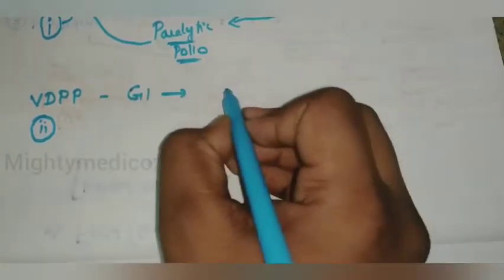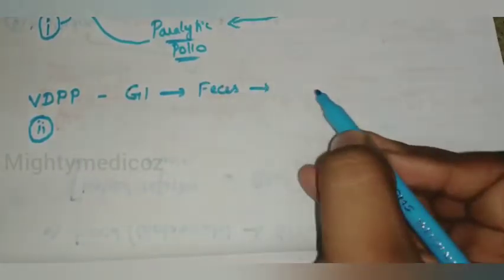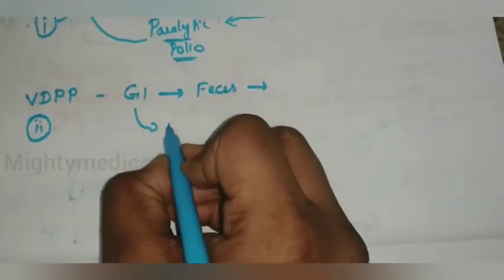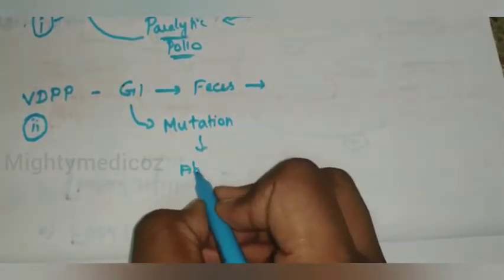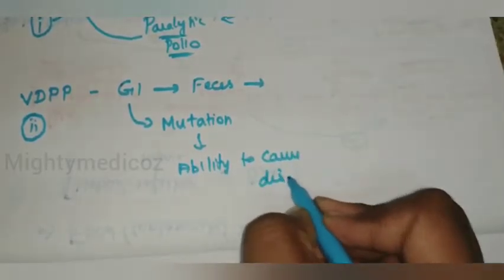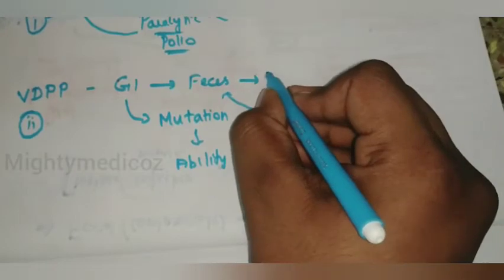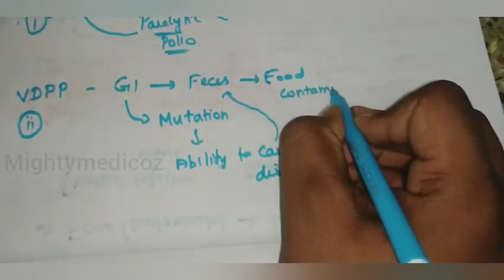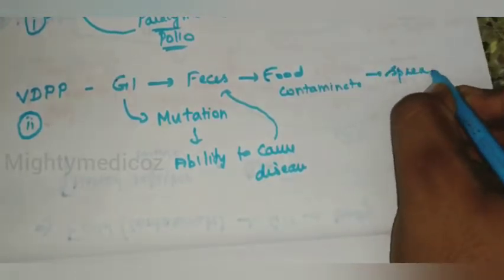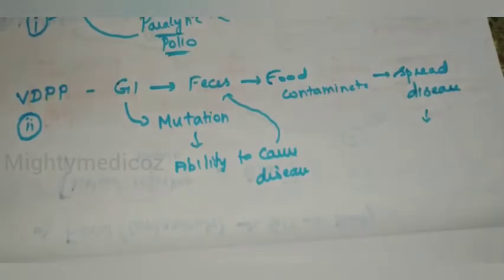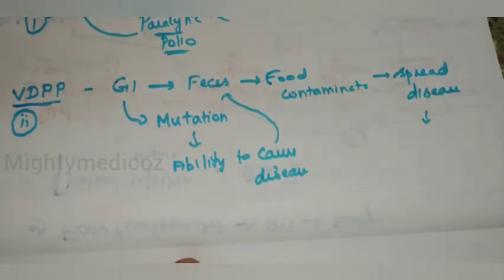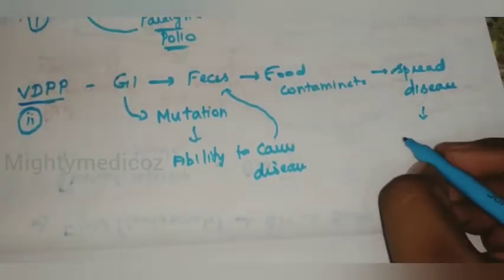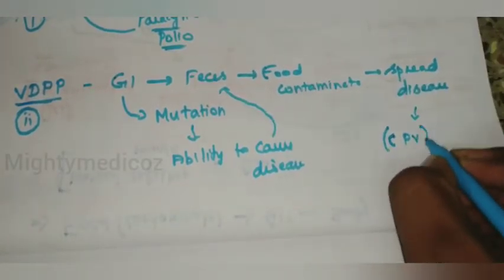Vaccine-derived paralytic polio, or VDPP, occurs when the OPV virus, within the GI tract, gets the ability to cause disease through mutation. It is shed in feces and can contaminate food and water, spreading disease. This is also called circulating vaccine-derived poliovirus, and it is one of the major risk factors for causing vaccine-derived paralytic polio.